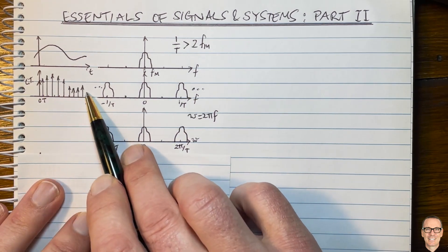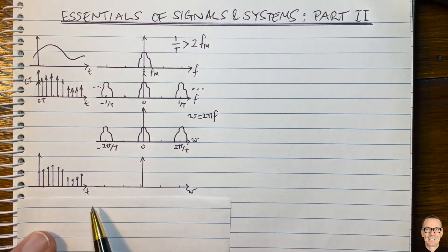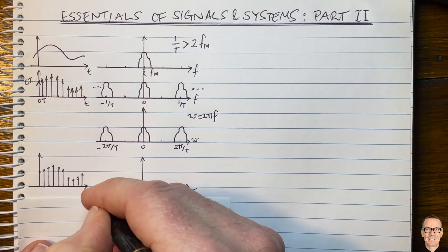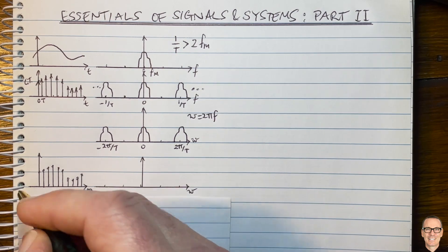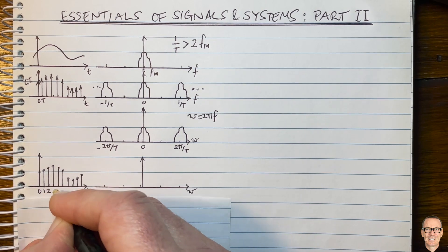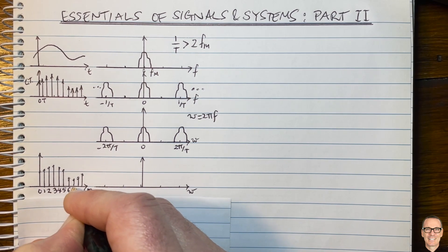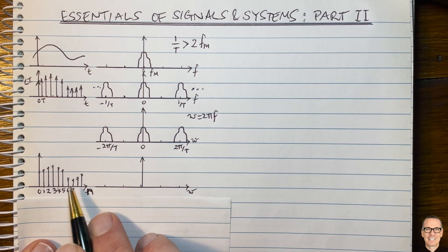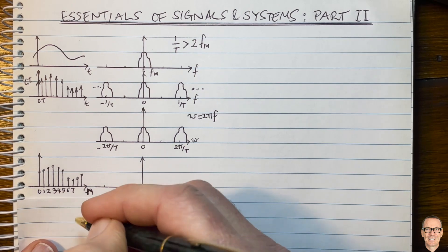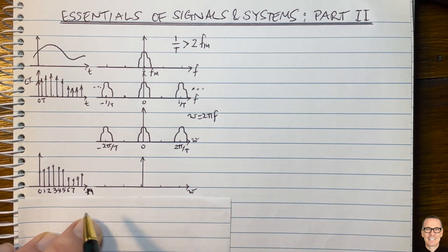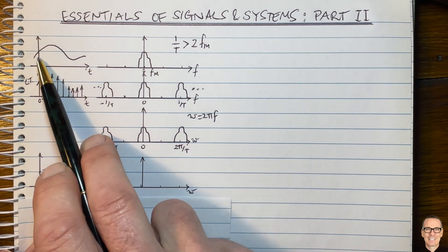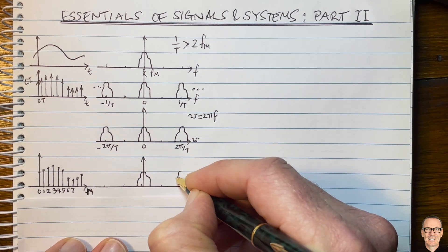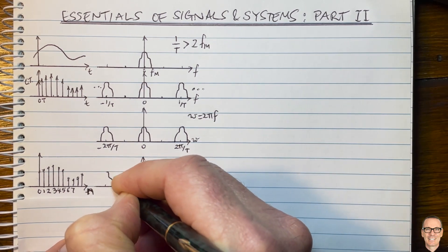Now let's think about signals in discrete time. That was continuous time sampling, but what we can do is take the values of those samples and store them in a computer. When we do that, the time period becomes a discrete time index, which we call little n — these are just integers: 0, 1, 2, 3, and so on. We're no longer dealing with a continuous time function; we're just storing indexed values. In the frequency domain it's still the same signal with the same shape, but the frequency is now scaled — an essential thing to know.